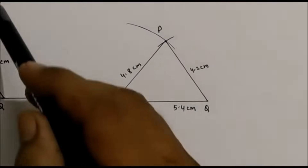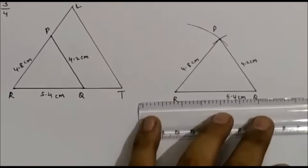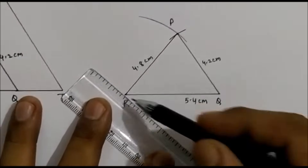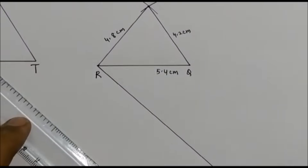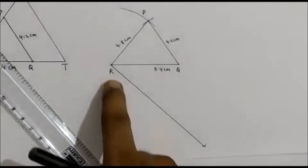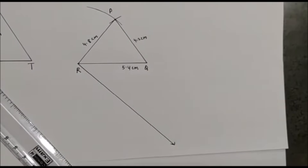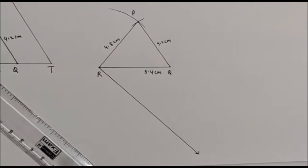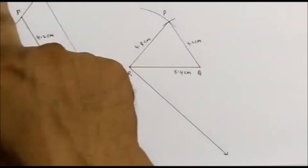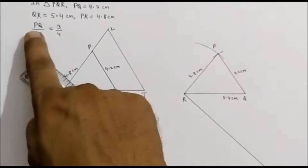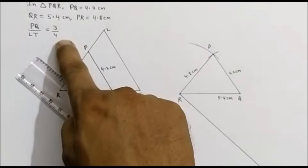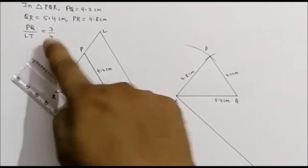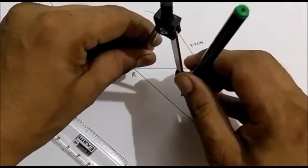Now to construct triangle LTR, from point R you draw an acute angle — any measurement. See the ratio: PQ upon LTR is 3 upon 4. The 4 is bigger, so we will take 4 and divide. We are going to cut 4 equal arcs here: 1, 2, 3, and 4.